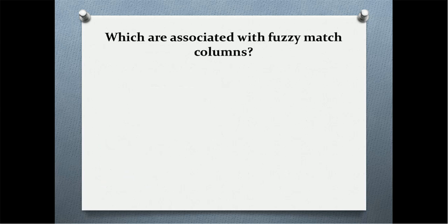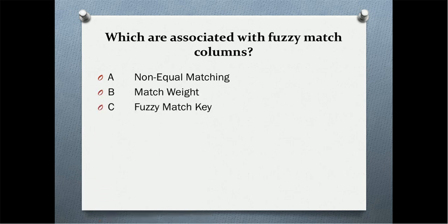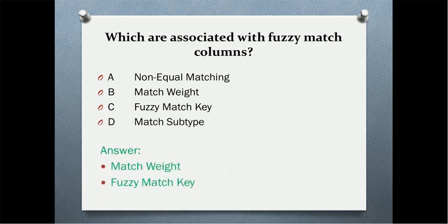Next question: which of the following are associated with fuzzy match columns? Option A: non-equal matching. Option B: match weight. Option C: fuzzy match key. Option D: match subtype.